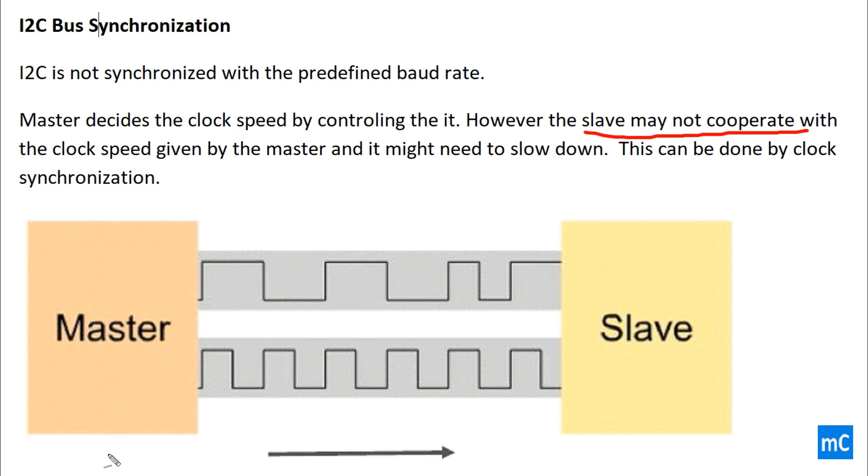Here we can see the diagram which shows the clock from the master to slave. This is clock and this one is data line. So, master only gives the clock to the slave.